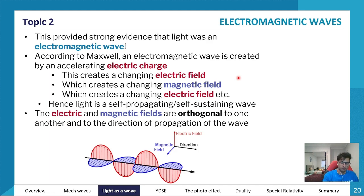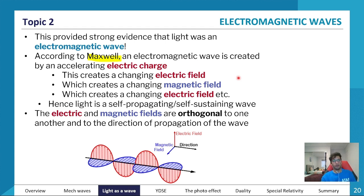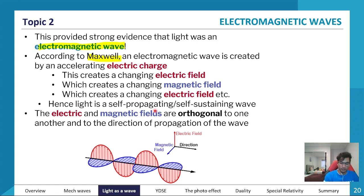A smart guy named Maxwell decided that light is actually a wave, and he called it the electromagnetic wave — you'll see where that name comes from. What he proposed was that light is actually the result of the acceleration of an electric charge.